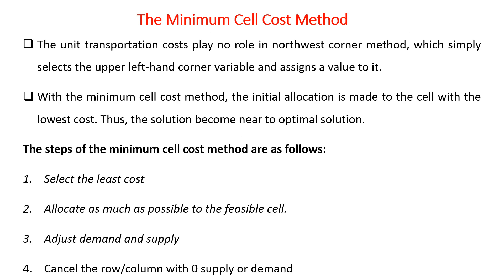As a reminder from lesson 13, the minimum cell cost method is an improved version of the northwest corner method. Instead of ignoring transportation costs, it makes the initial allocation to the cell with the lowest cost. The steps are: select the lowest cost cell, allocate as much as possible to that feasible cell, adjust supply and demand, and cancel the row or column with zero remaining supply or demand.